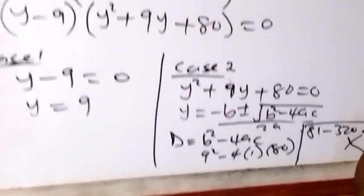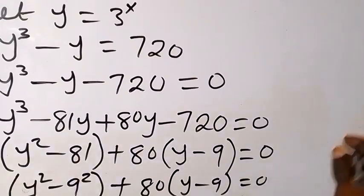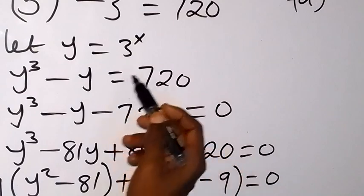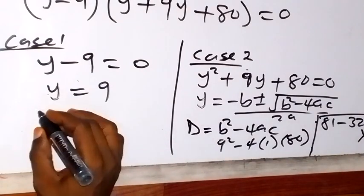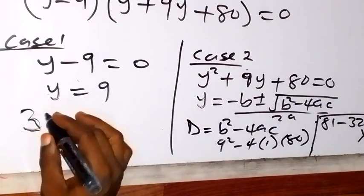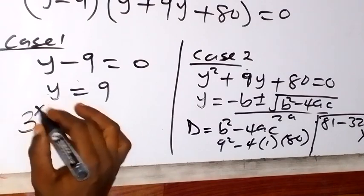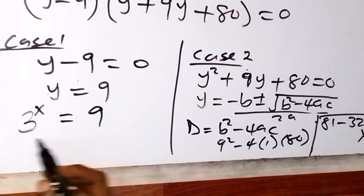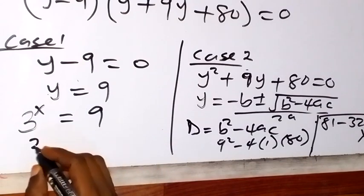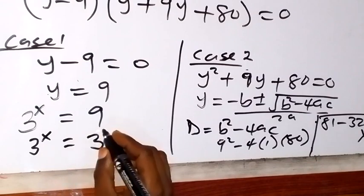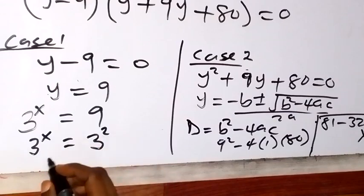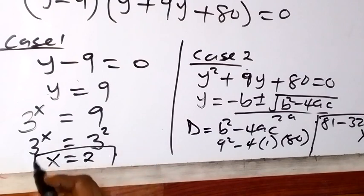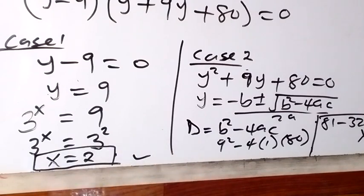From y equals 9, and recalling that y equals 3 raised to power x, we have 3 raised to power x equals 9. Since 9 can be written in base 3 as 3 raised to power 2, the bases are equal and we can equate the exponents, giving x equals 2. Substituting x equals 2 back into the original equation confirms it satisfies the equation.